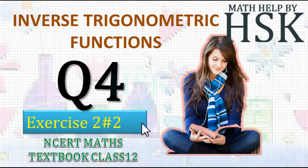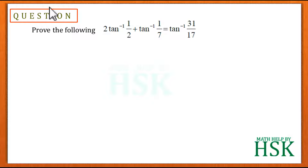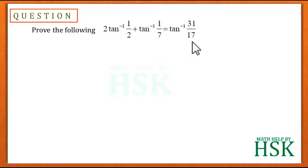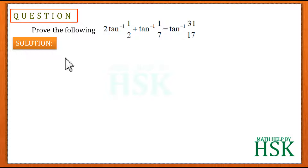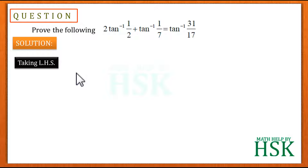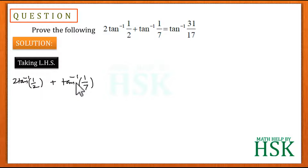Question 4: we have to prove that 2·tan⁻¹(1/2) + tan⁻¹(1/7) is equal to tan⁻¹(31/17). To prove this equation, we take the left hand side, which has 2·tan⁻¹(1/2) + tan⁻¹(1/7). We first solve the term 2·tan⁻¹(1/2).